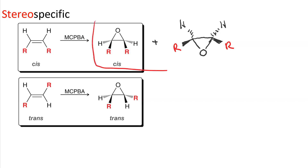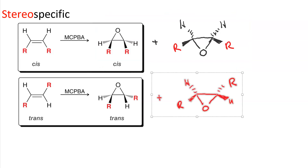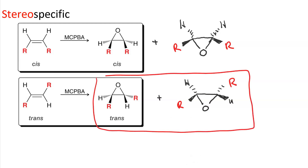So when you do epoxidation of a cis alkene, you get a pair of cis epoxides. And when you do epoxidation of a trans alkene, you get a pair of trans epoxides.